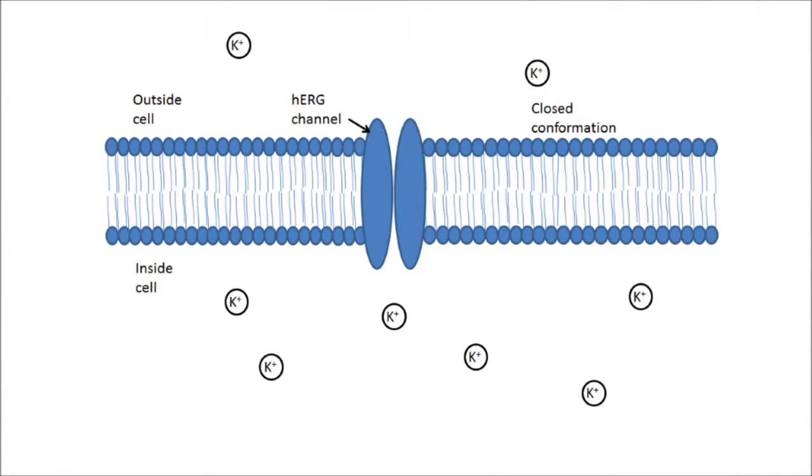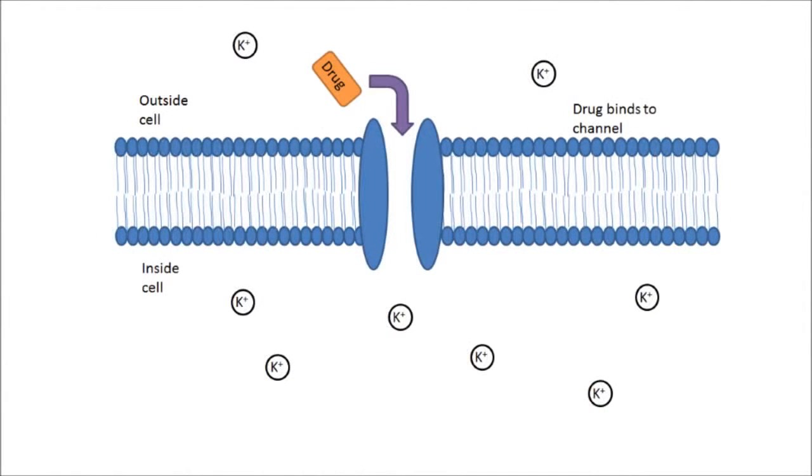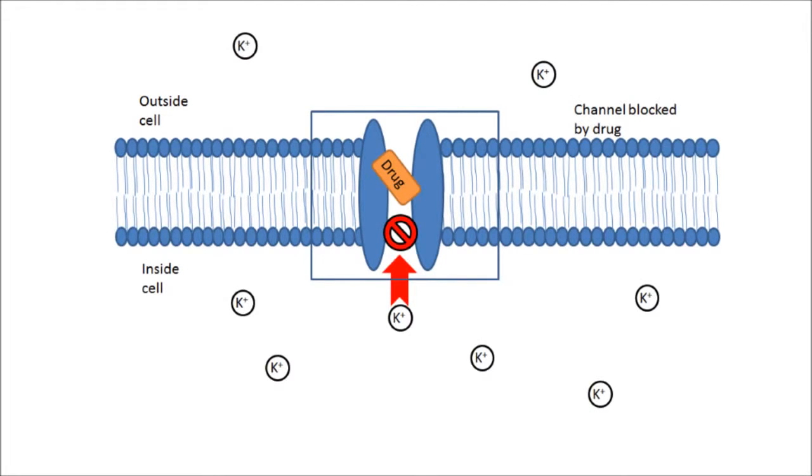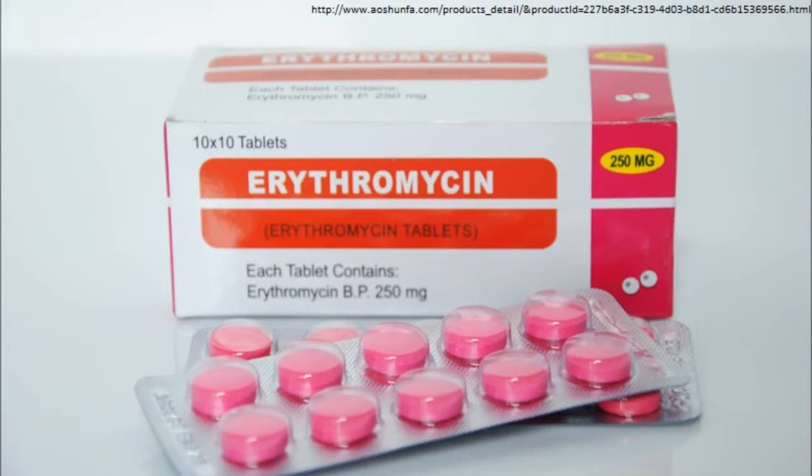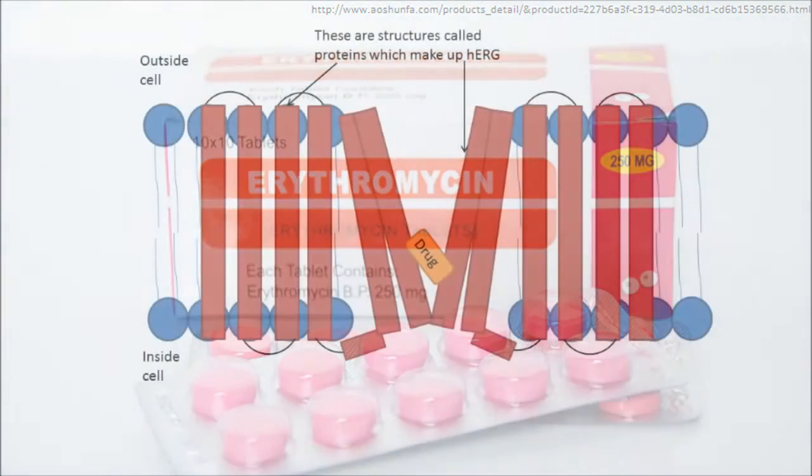Around 15 years ago, it was found that certain pharmaceutical drugs were causing blockage of the current. A typical example would be the antibiotic erythromycin, used to treat common infections like bronchitis or bacterial pneumonia. Due to this, all new drugs are tested to see if they block Herg.